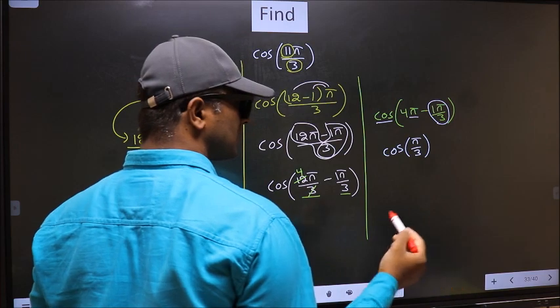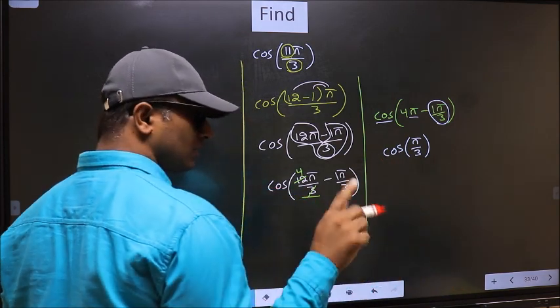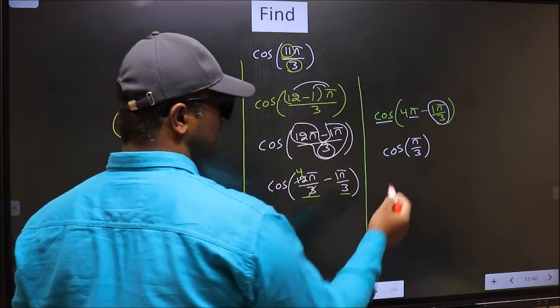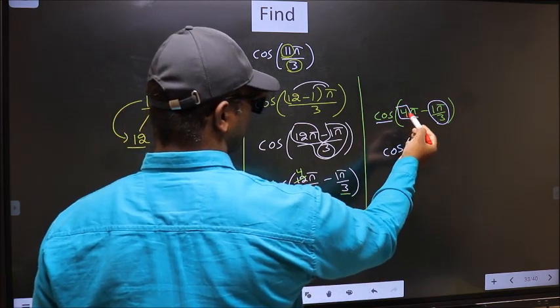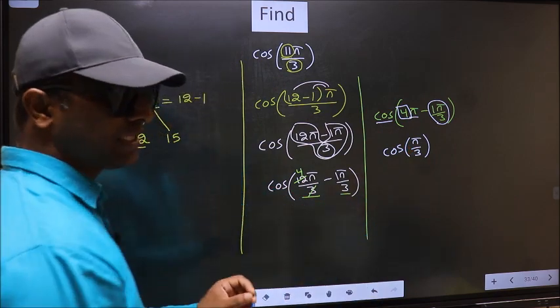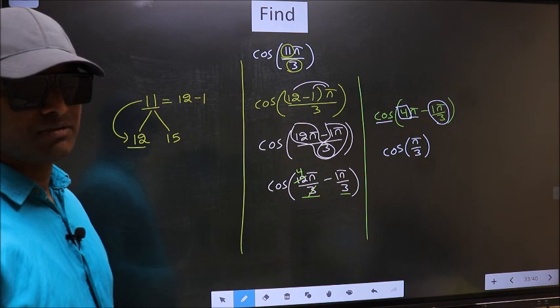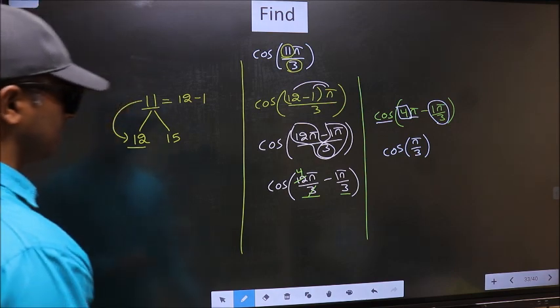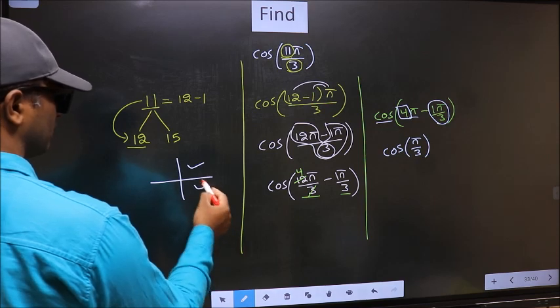Now the question arises, will we get here plus or minus? To answer that, we should look at the number before pi, which is 4. And 4 is even. And all the even multiples of pi, they lie either in the first or in the fourth quadrant.